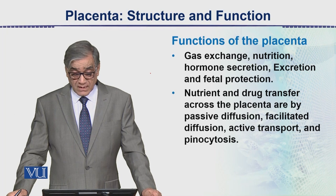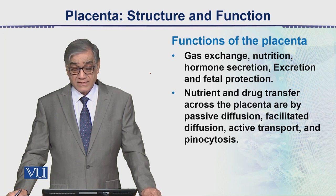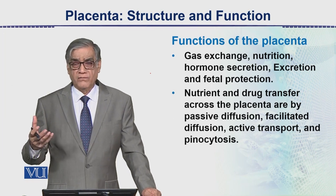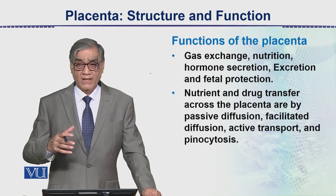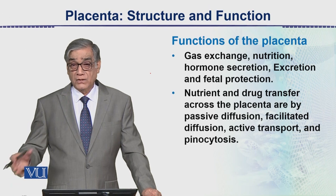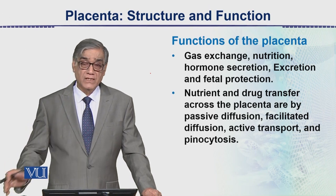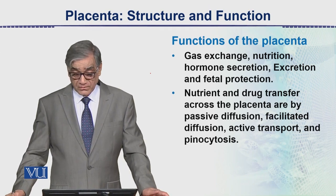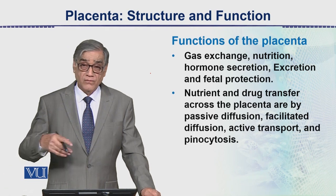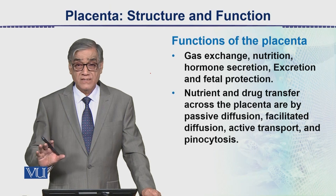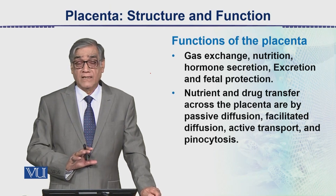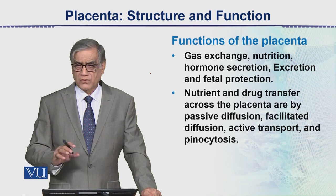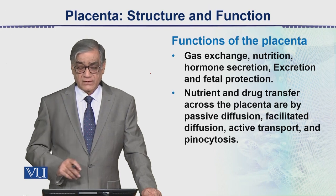Nutrients and drug transfer across the placenta are by passive diffusion - that means passive transport or diffusion - there is movement from high to low concentration. If mother's blood has more nutrients, they will diffuse into the fetus through the placenta. There is also facilitated diffusion. Active transport also occurs - movement from low to high concentration - for vital substances without which life would be at risk. And then there is pinocytosis, which is a special method of transport.